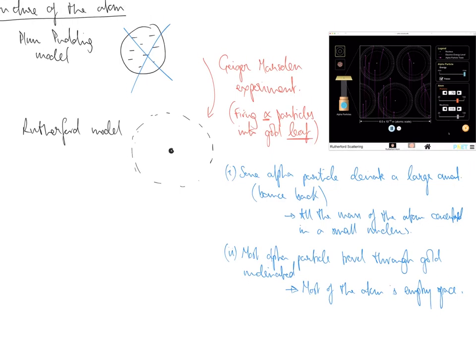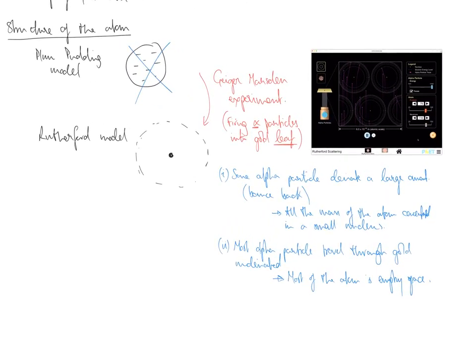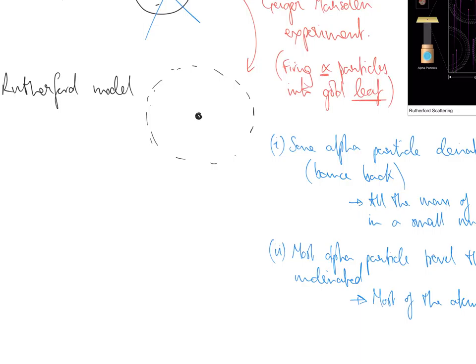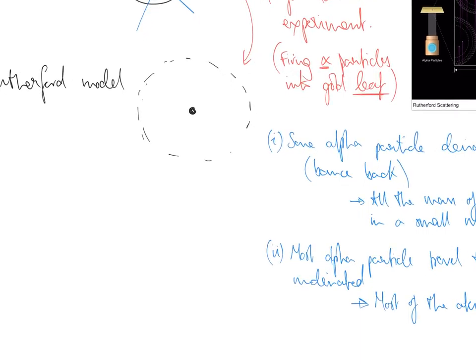Excellent. So, that is essentially the GCSE knowledge recount. Let's just put some sizes and scales to this atom. So, to this atom, it's important that we understand the width of about 10 to the minus 10 metres.